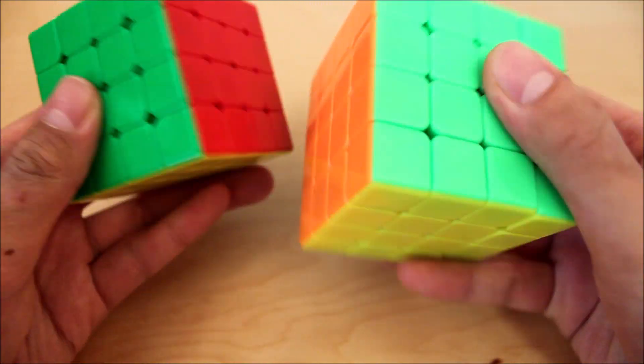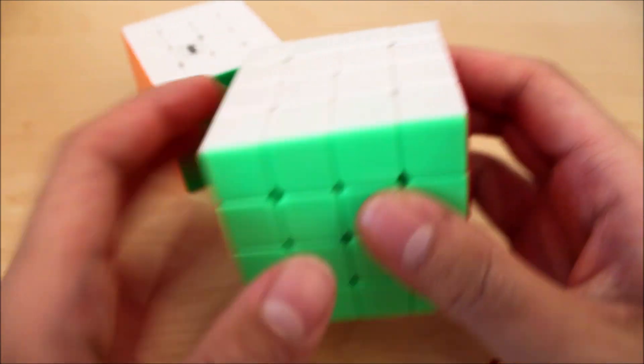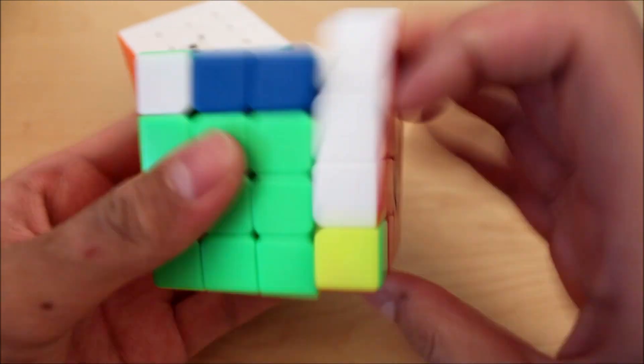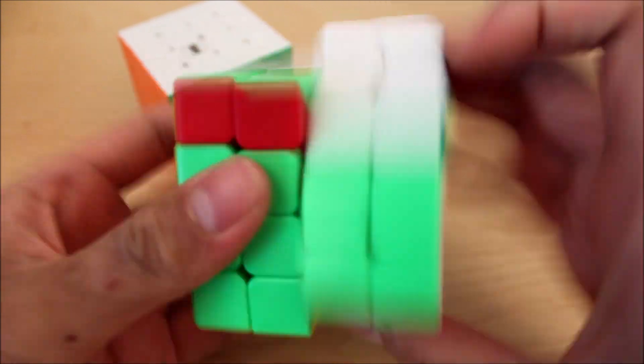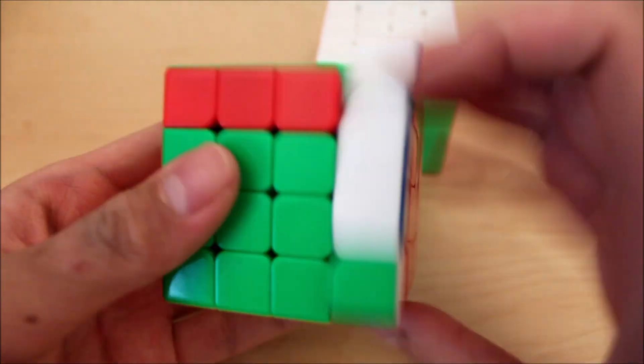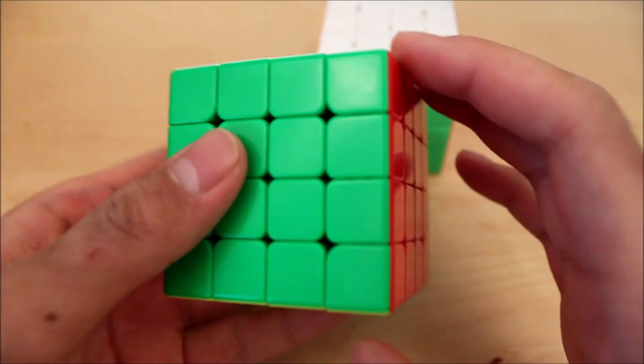As for turning, they both have that similar Moyu kind of feel, but the Aosu GTS-2 is a bit more of an airy turning. Well, the WR-M is more of a compact feeling. You can tell that's a bit lower pitch from the sound.